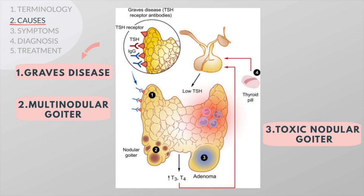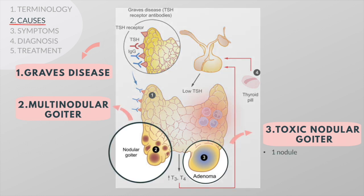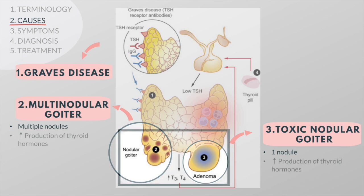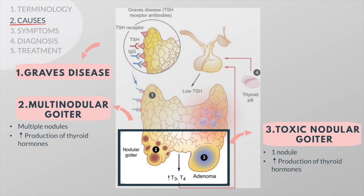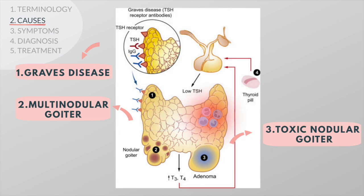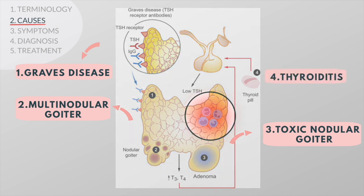Another type of hyperthyroidism is characterized by one or more nodules or lumps in the thyroid that may gradually grow and increase their activity so that the total output of thyroid hormone into the blood is greater than normal. This condition is known as toxic nodular or multinodular goiter. People may also temporarily have symptoms of hyperthyroidism if they have a condition called thyroiditis — an inflammation of the thyroid gland that causes the gland to leak stored thyroid hormone.